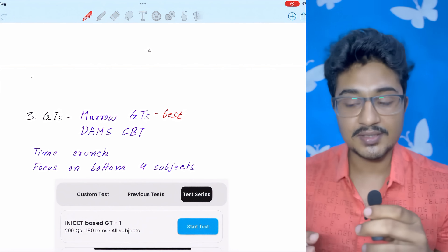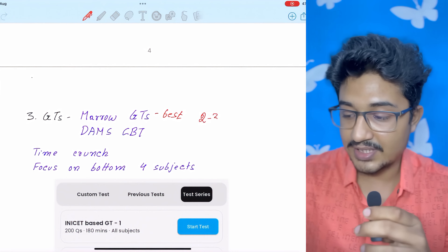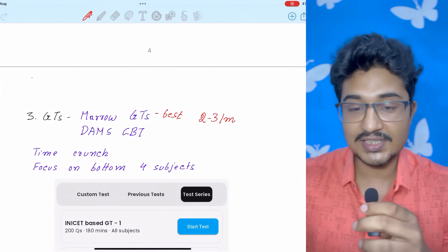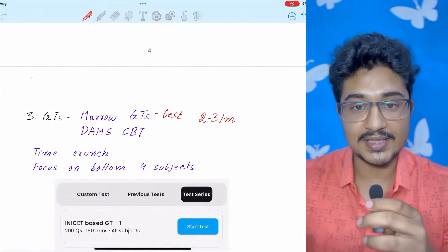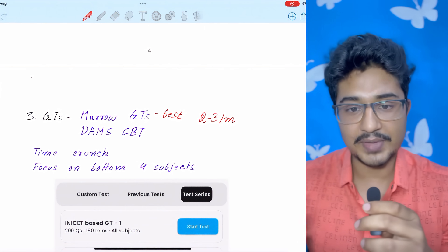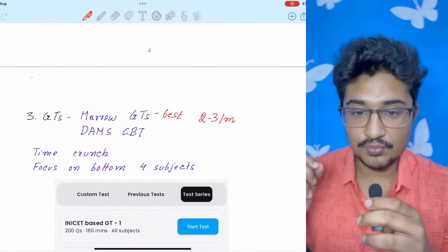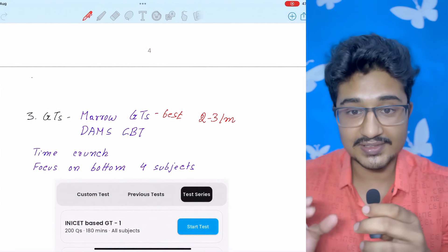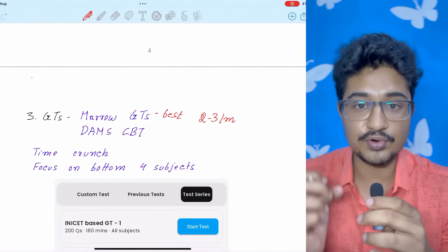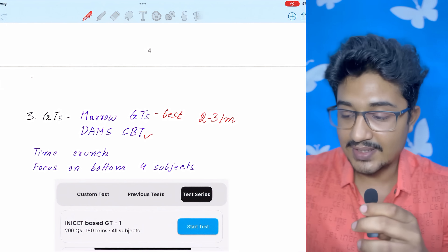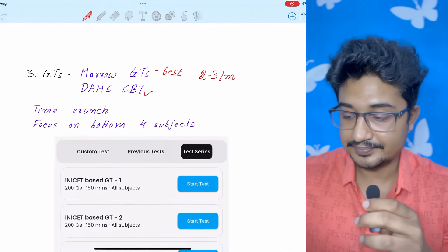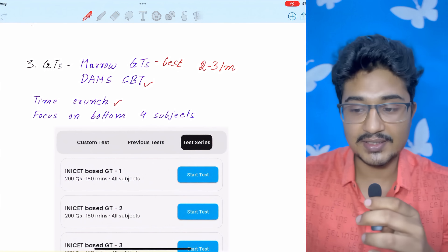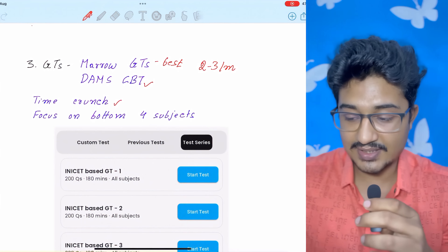Coming to GTs, for GTs, you should give approximately two to three GTs every month. And for this Marrow GTs are the best. It has no errors and all. So Marrow GT is the best. And one exam you should give as a computer-based test also. So that you have the real exam hall scenario exposure. For that, DAMS conducts the CBT. And GT mein time crunch hota hai. How to handle that I am going to tell in the next slides.